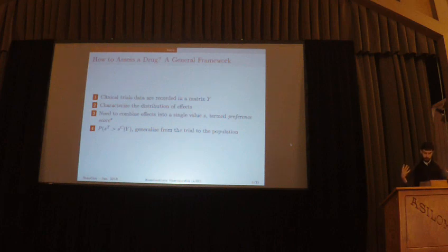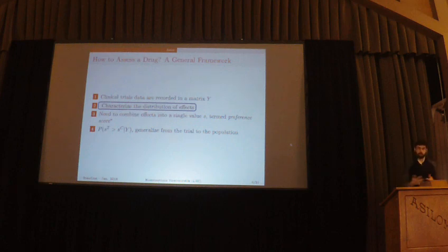This general framework is you start with the clinical trials data, this is the matrix Y. You have two matrices, one for treatment and one for control. Then you characterize somehow the distribution of the effects. You need to combine all of this into a single value S, which is a preference score. Then you will ask questions about this score, like what is the probability that the score for the treatment is higher than the control given the data. Generally that will basically be how you generalize from the trial to the population, which we really care about.